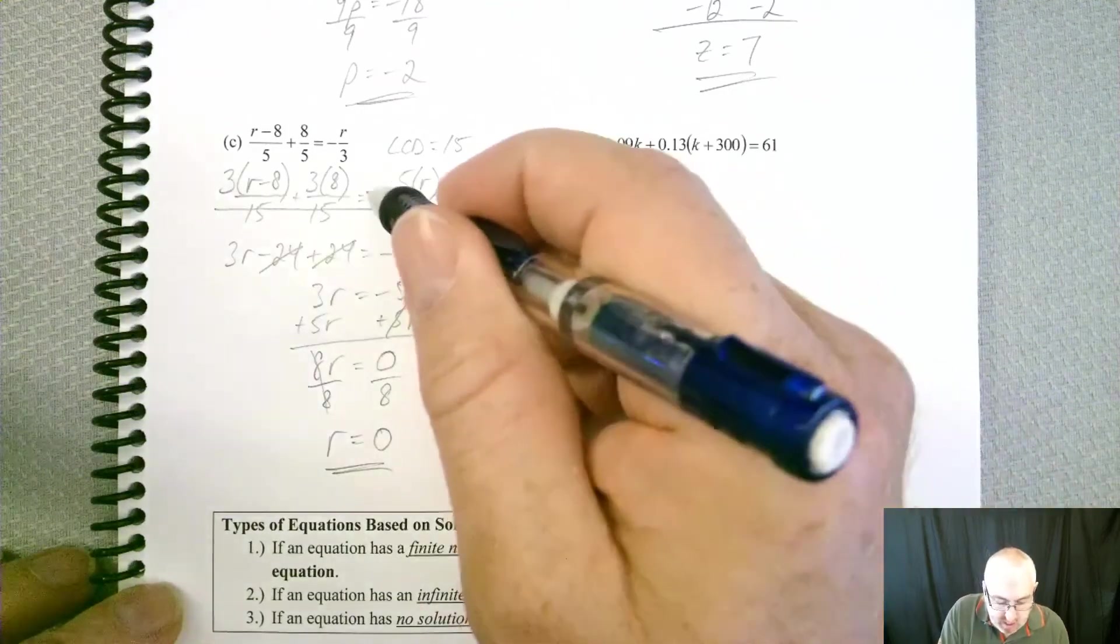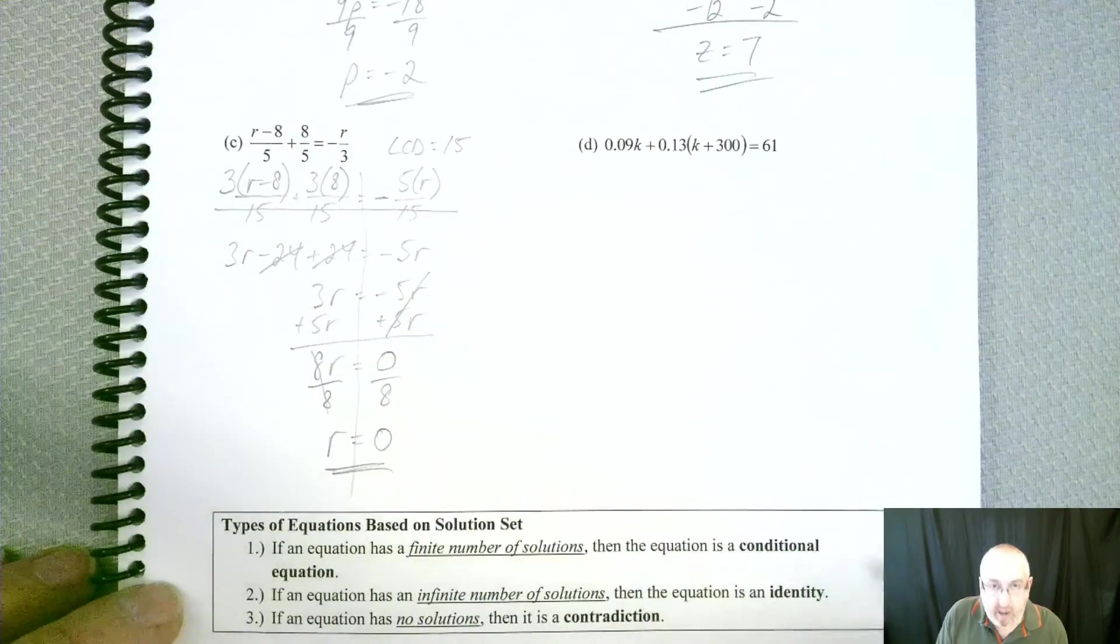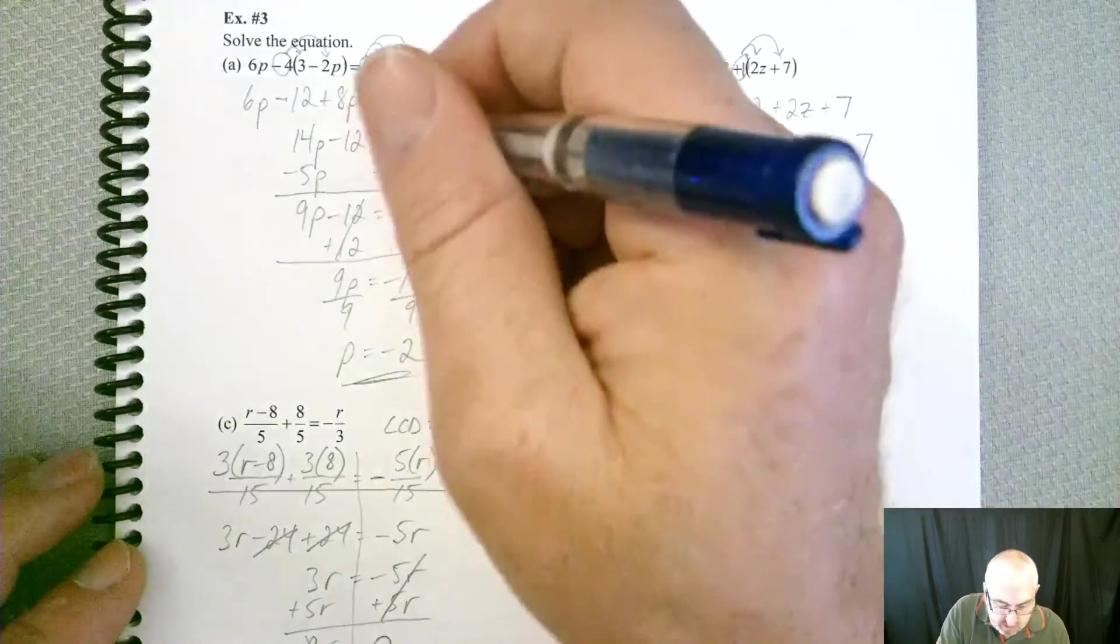Now, you can see here that the equal sign is pretty consistently on that line. And if I go up to my other ones, you can see the same thing.